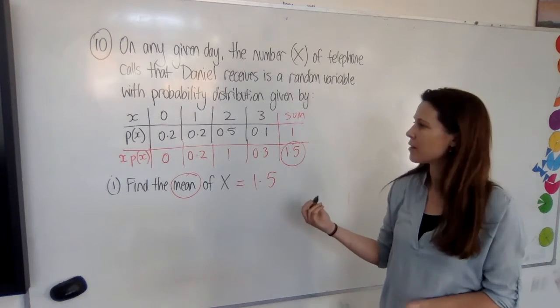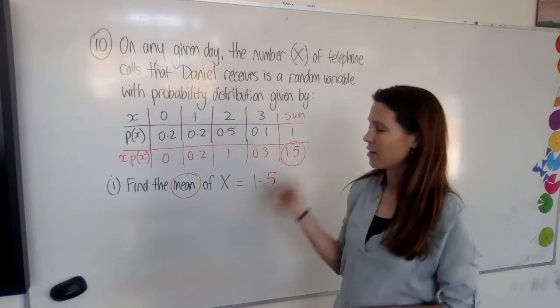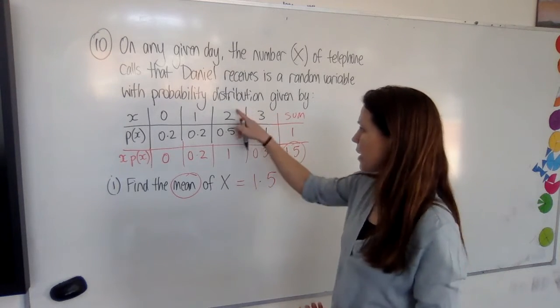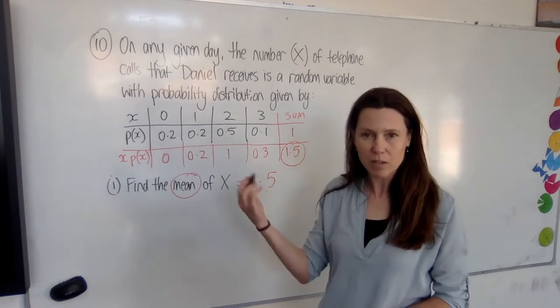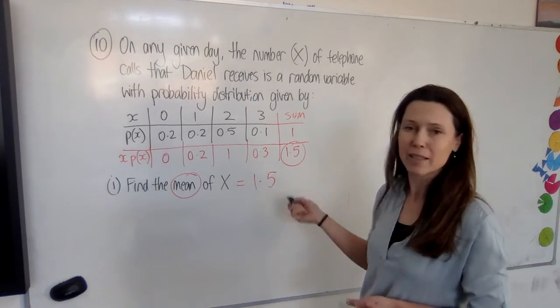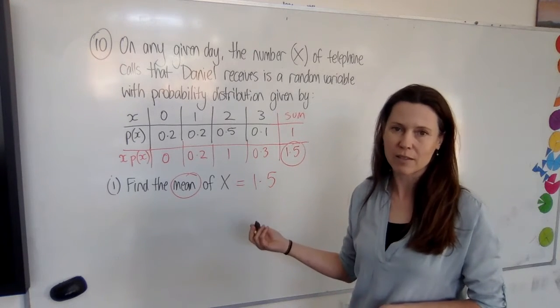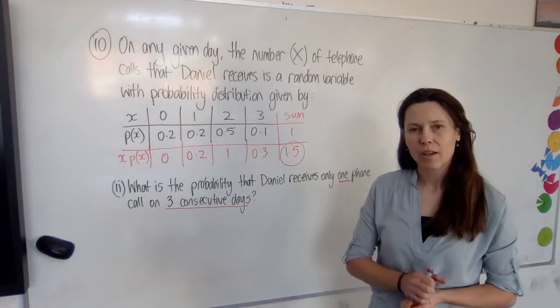Now, by coincidence, if you add up 0, 1, 2, and 3, you get 6. And if you divide by how many options there are, which is 4, 6 divided by 4 is also 1.5. But if you do it that way, you won't get any marks at all, because that's actually just a coincidence in this case that it gives you the same answer.